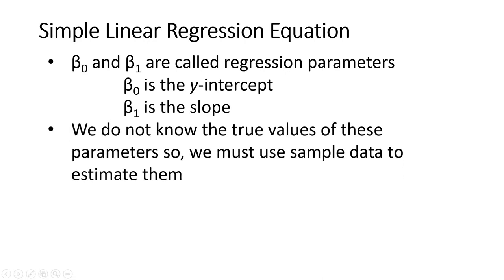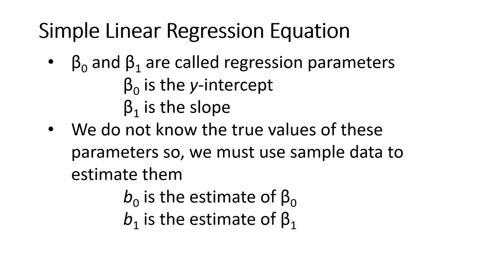There's a problem with that. We never know the true values of these population parameters, so we're going to use our sample data to estimate them. Because of that we're going to use b0 as the estimate of beta 0 and b1 as the estimate of beta 1.